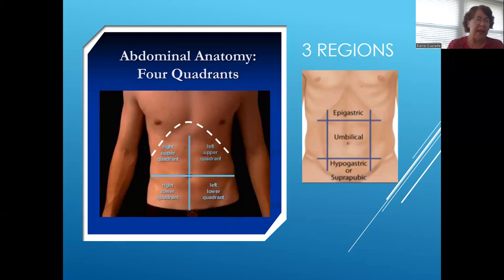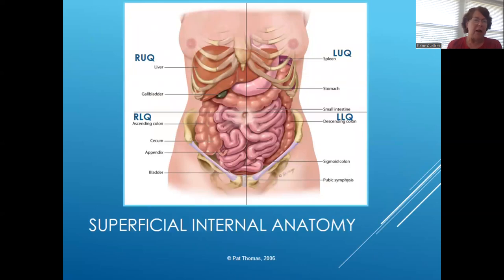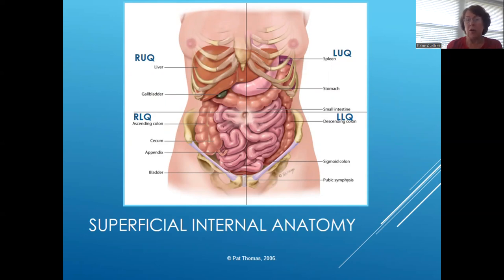The abdomen is divided into four quadrants: right and left upper quadrant, right and left lower quadrants, and three regions in the center — the epigastric, the umbilical, and the hypogastric or suprapubic area. The right upper quadrant has the liver and gallbladder. Rarely do we see problems in this quadrant in youth. Once in a while you may see an obese high school student with gallbladder issues, but that's not very common.